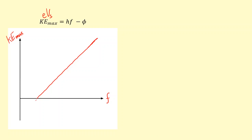And if you extrapolate backwards, you should get a negative intercept like so. The negative intercept here should be the work function. The gradient should be Planck's constant.